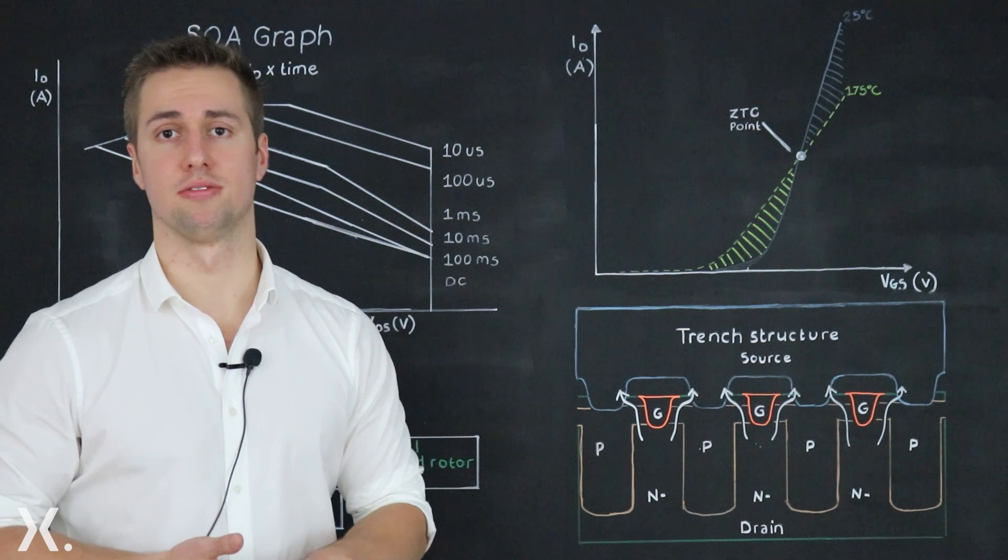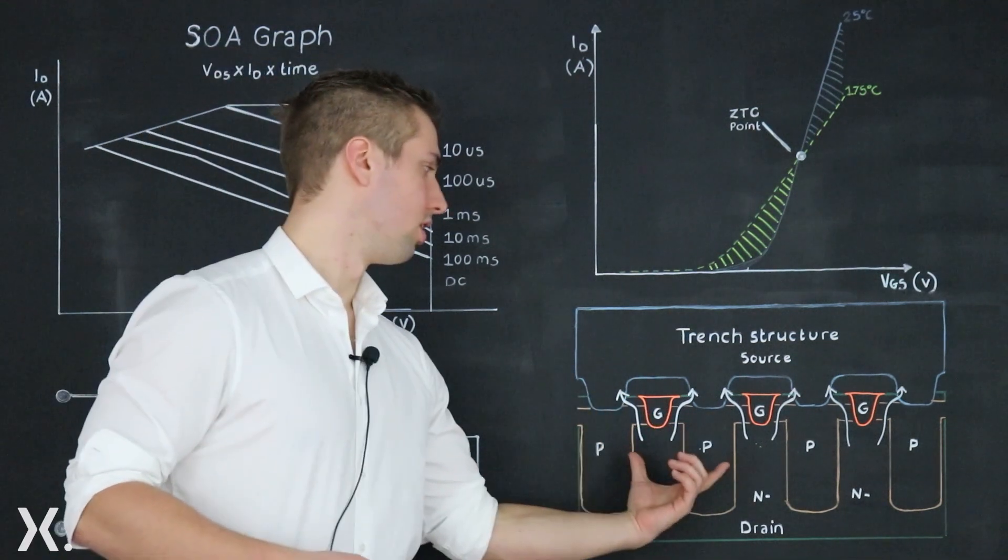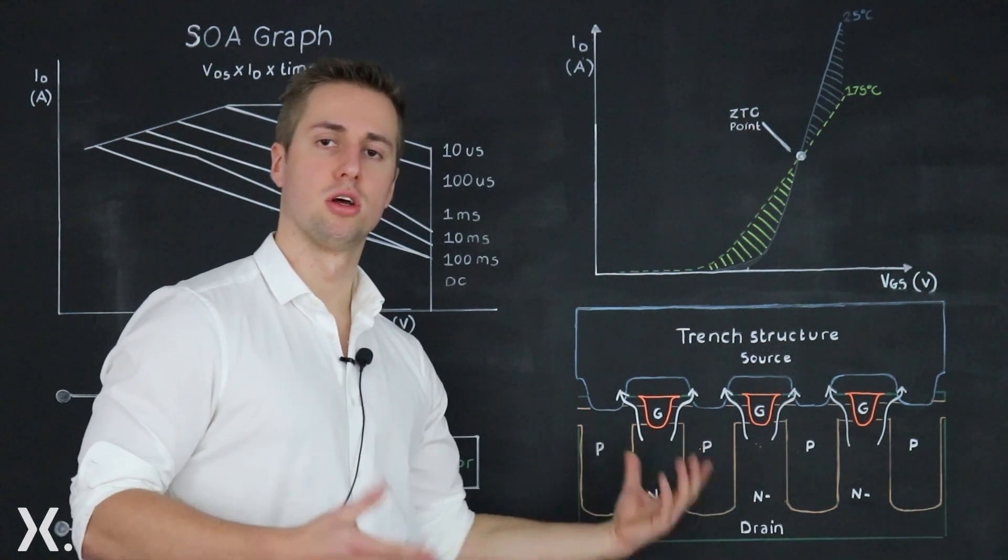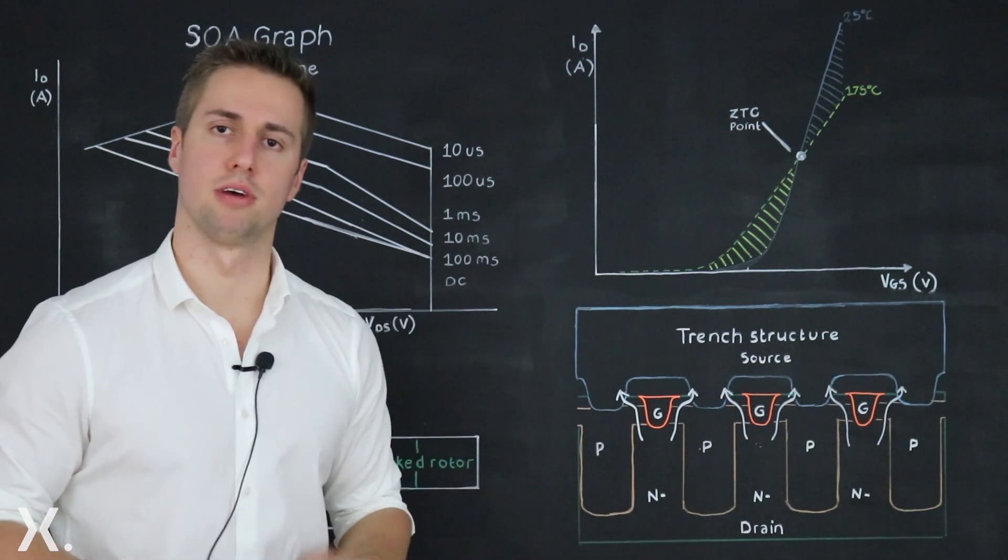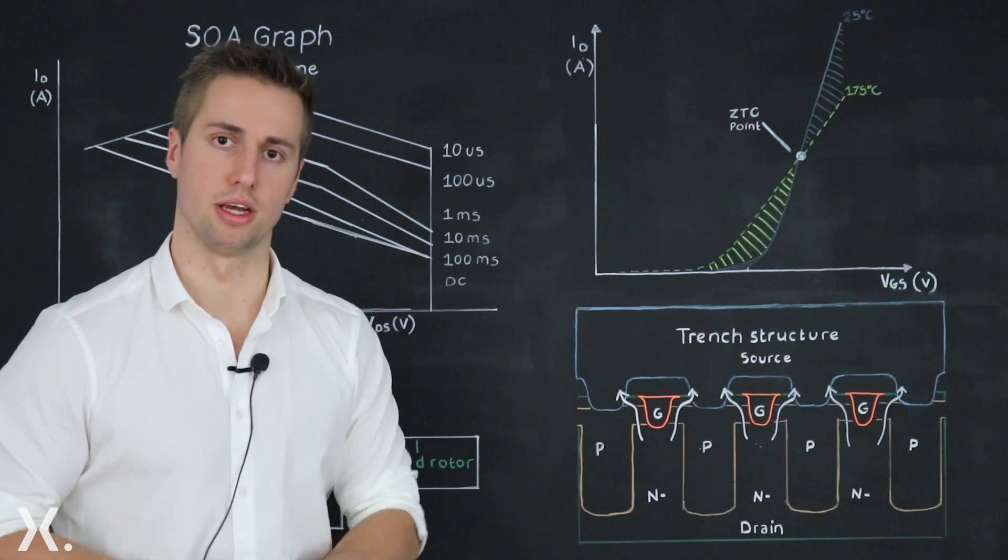This is why many MOSFET vendors decide to rather change the pitch and narrow it all to put more trenches in parallel to reduce RDS on. This is effective however it comes at the cost of weakening the SOA.